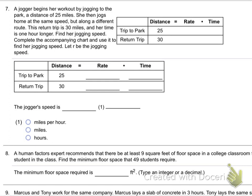Here we are in question number 7. This is the third and last kind of word problem — a travel word problem. The jogger begins her workout by jogging to the park, distance 25 miles. Notice down here we have a chart: distance, rate, time. I call it the DIRT equation — a student once said 'you mean the dirt formula?' D equals R times T, where the equal sign sits where the I would be. Distance equals rate times time — that's what you use for travel problems.